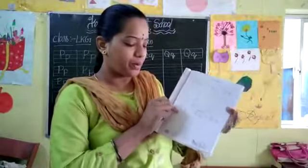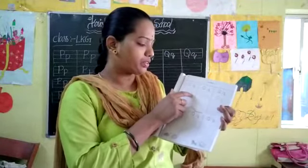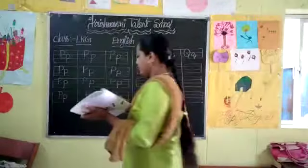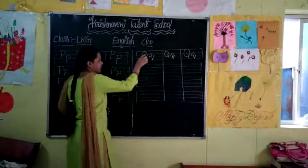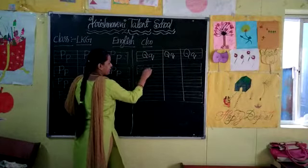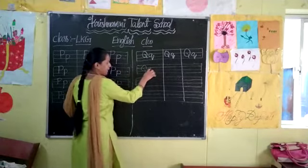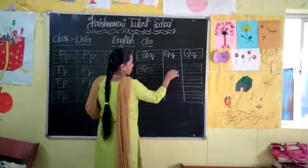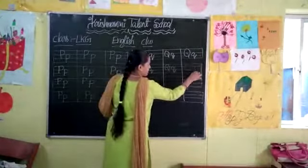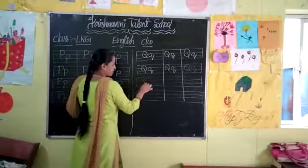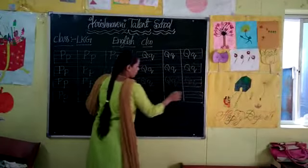Open page number 57. Here capital Q and small q — classwork and homework is there. How to write capital Q and small q in four lines, I will show you. Write capital Q in the first three lines, and small q write in the second line to fourth line. Capital Q, small q. Say everyone: capital Q, small q.